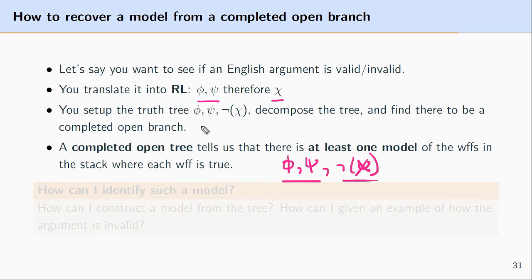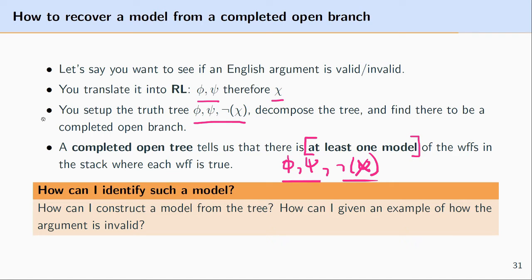So a completed open tree of these particular formulas indicates to us that there's at least one model — one configuration of the world — that makes all of the premises of the argument true and the conclusion false. So what this video is going to aim at doing is explain how you can construct or recover a kind of toy model from that completed open branch.